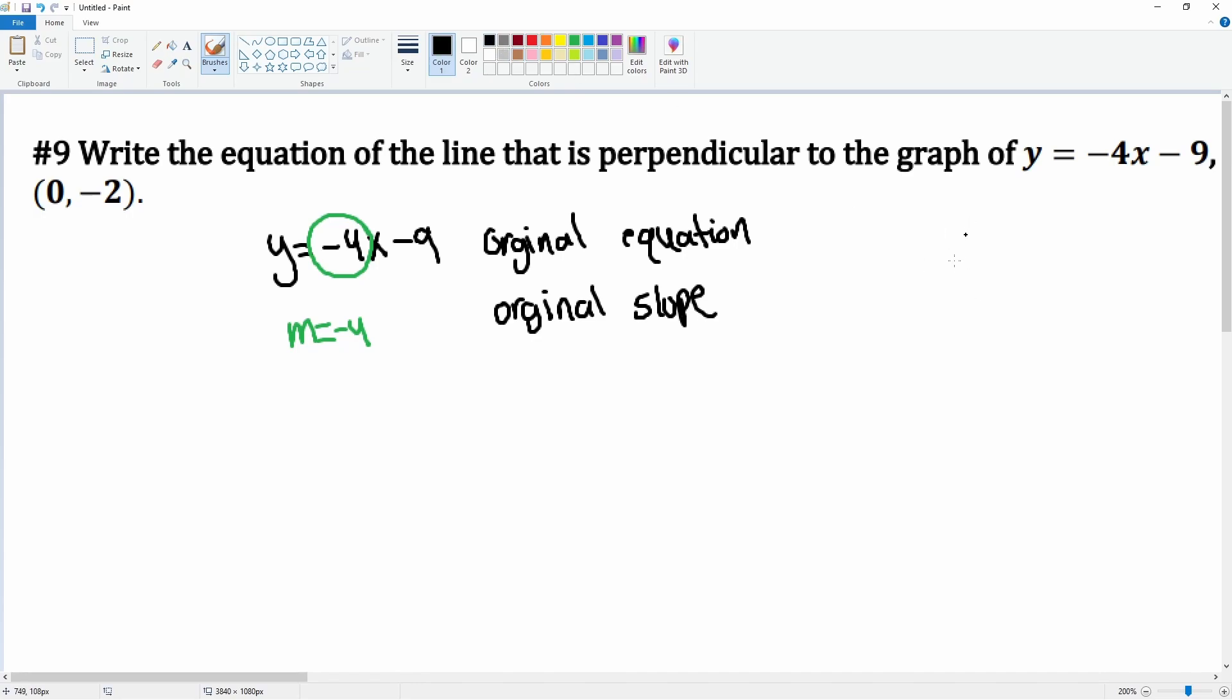We want a new equation, a new equation of a line, but this time we want the perpendicular slope. The perpendicular slope is going to be the opposite reciprocal of negative 4, right?